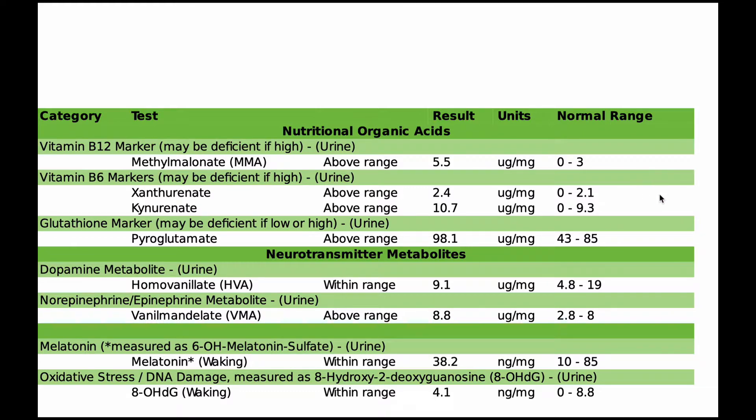Glutathione is one of the main detoxification markers in phase two of liver detoxification. Dopamine — HVA is the metabolite of dopamine. The whole body uses dopamine, so it's not specifically measuring brain levels, but you can get a good idea based on someone's symptoms whether they're experiencing too little or too much dopamine. Similarly, norepinephrine is the fight-or-flight neurotransmitter — high levels can lead to anxiety and always being on edge. Melatonin is important for sleep, and doing this test can help to know whether you're low in melatonin or if it's too much cortisol stopping you from sleeping. The last marker is an oxidative stress marker — high levels can lead to DNA damage, so this is an important marker to keep low.